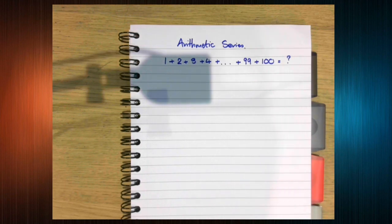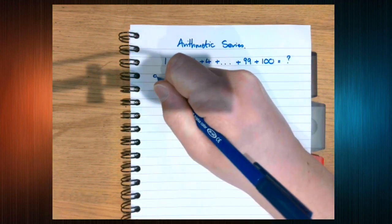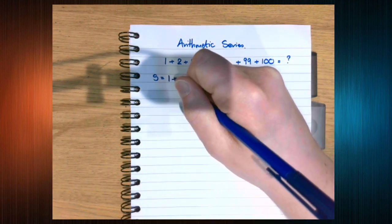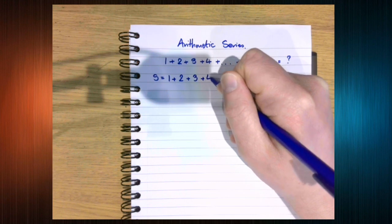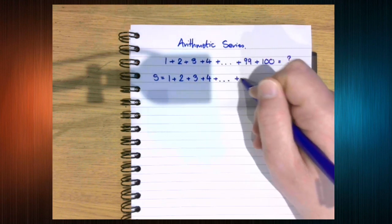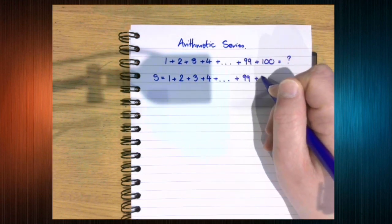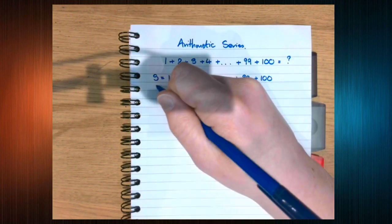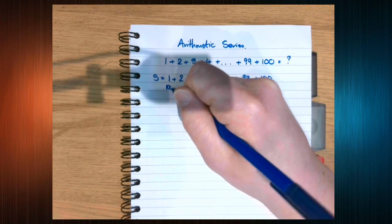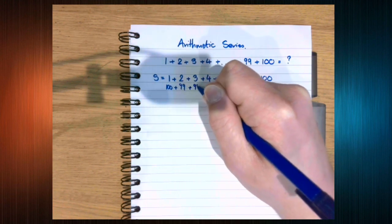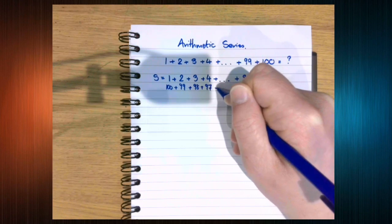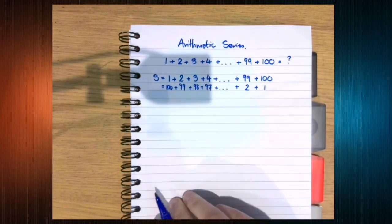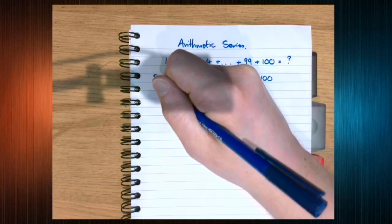What Gauss did is he recognized, okay, well, if I call this total that I'm trying to find S, what happens if I write all of the numbers backwards? Well, because of the way addition works, this is also S.